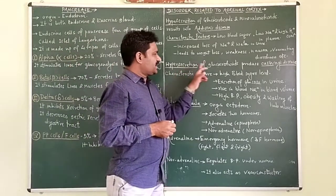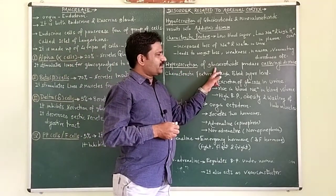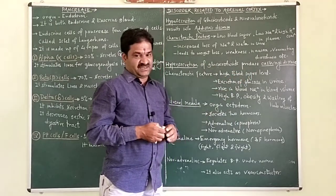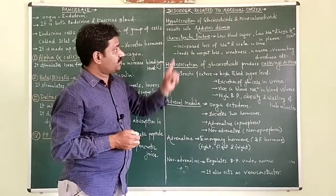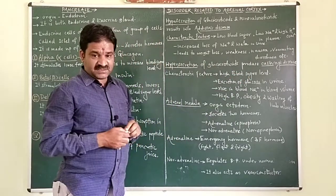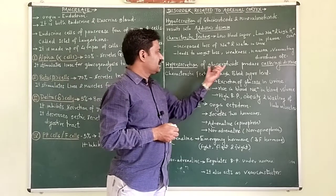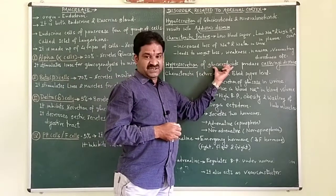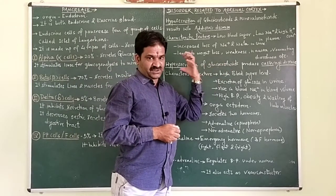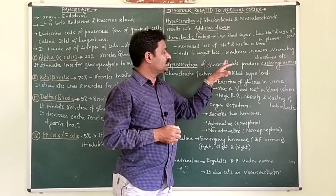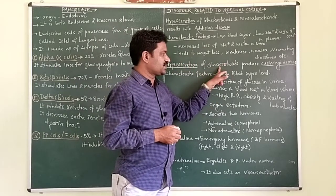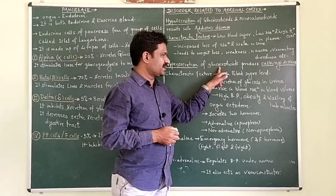Hypersecretion of glucocorticoids produces Cushing's disease. The first disorder is Addison's disease and the second one is Cushing's disease, which is caused due to the hypersecretion of glucocorticoids.